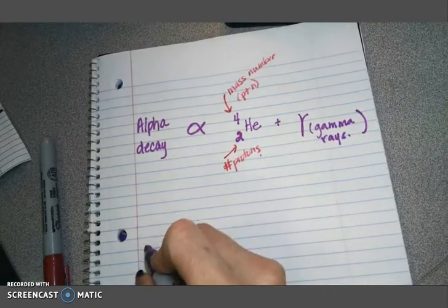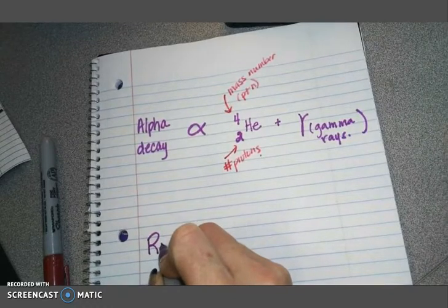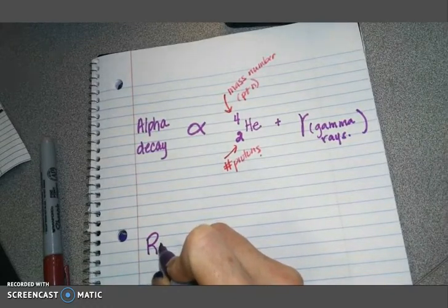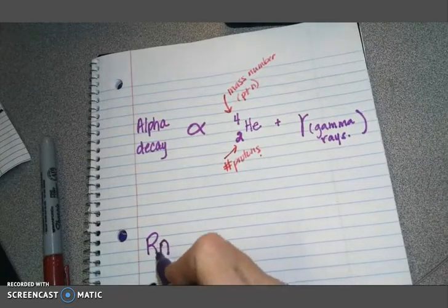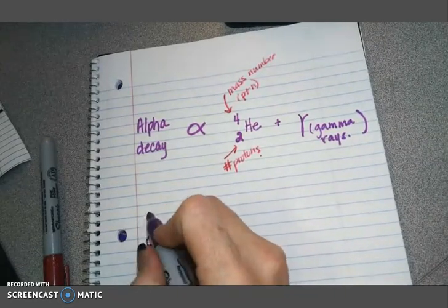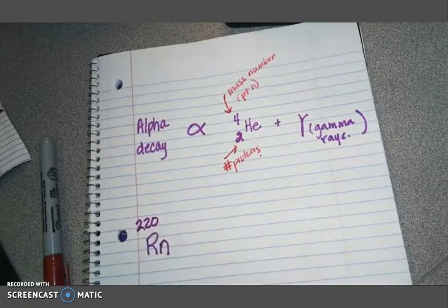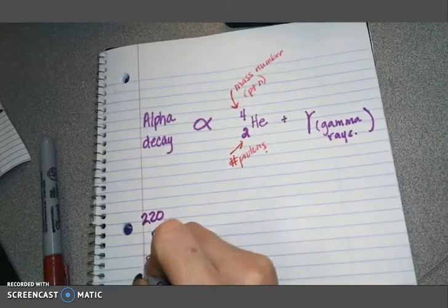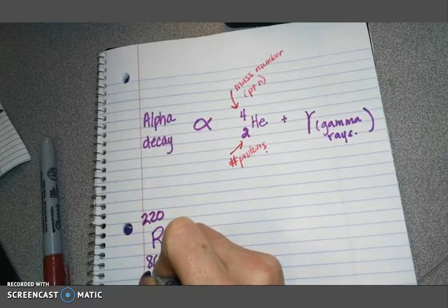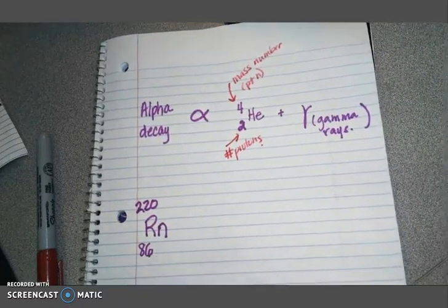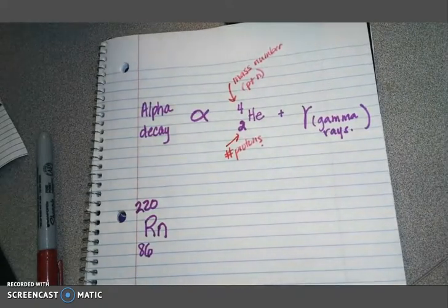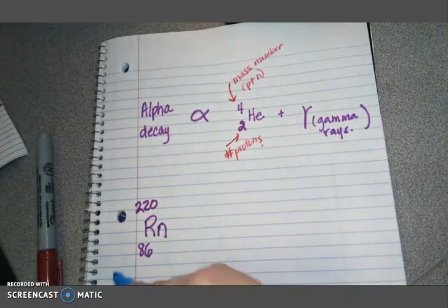Let's start with an element called radon. This is radon-220. And radon has an atomic number of 86. Okay, so that's what we start with. This is called our parent element.